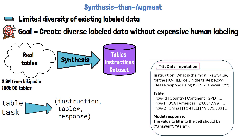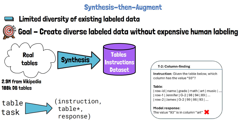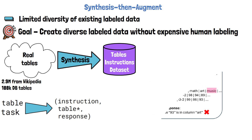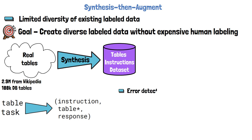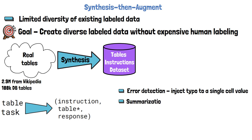The table in the generated sample is not necessarily identical to the input table. For example, for the data imputation task, they sample a table and randomly replace one cell with a toFill token, using the original cell value as the label. Instructions can be manually crafted and reused for other samples of the same task with different tables. Another example is column finding: given a table, they detect a value that appears exactly once and automatically generate the instruction to look for that value — for instance, 93 — using the column name 'music' as the label. Other tasks include error detection, where a typo is injected automatically and the original cell value is used as the label.